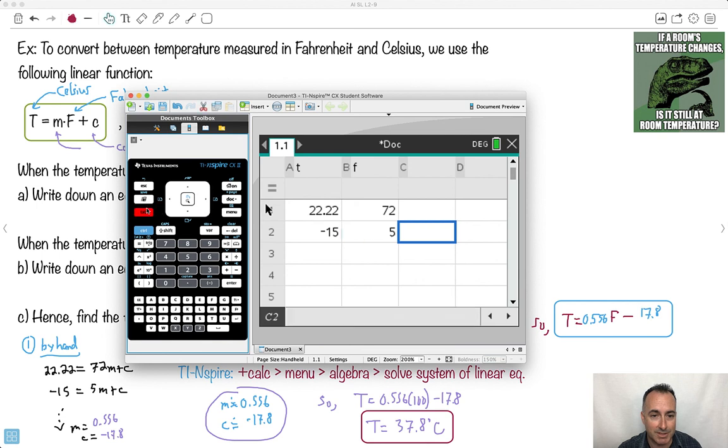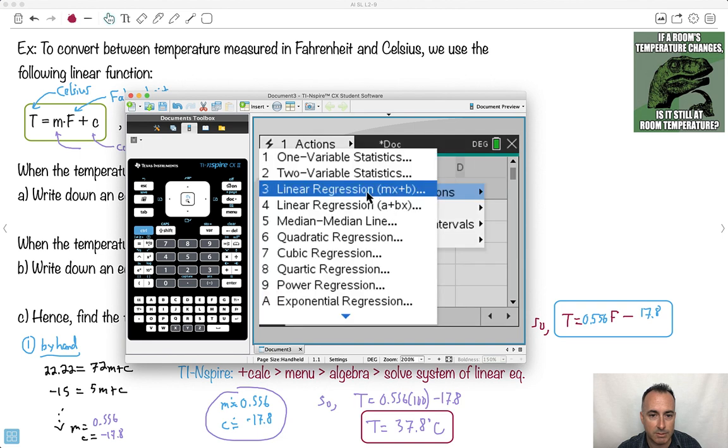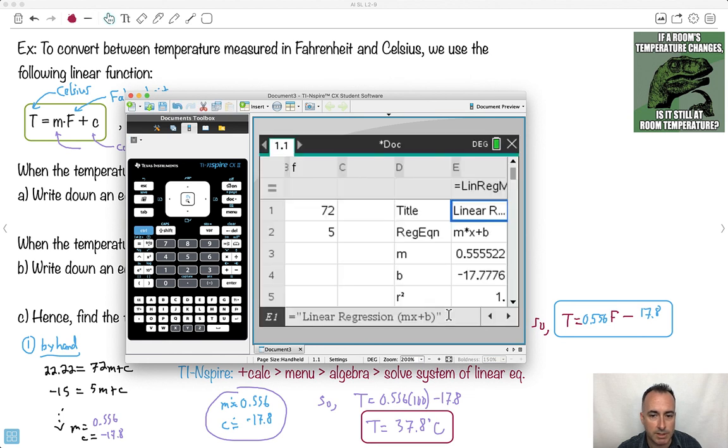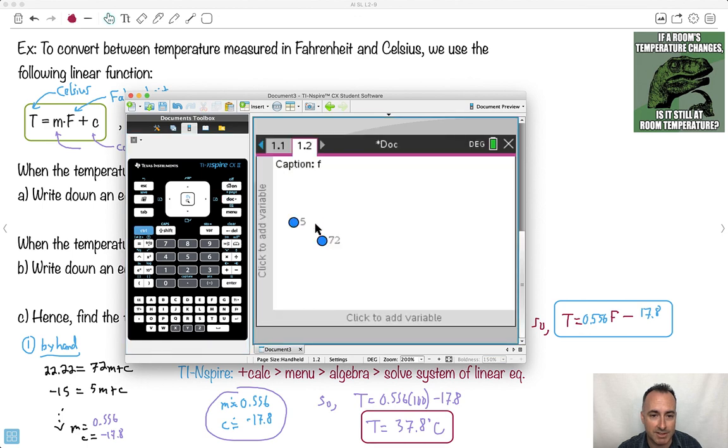And then what you could do easily is just go ahead and do a regression. So do menu, statistics, and say give me the linear regression mx plus b. You have to make sure you tell it which one is the x—x was the F value. The y value is T, because this is always x, this is always the y. And say go ahead. Notice it gave me the values here. It told me m was 0.555. And this was b. And by the way, it even told you the R value to tell you how close you were. And it matched exactly. Of course it matches exactly, there were two points. If you want to see what those points look like, you could have plotted this.